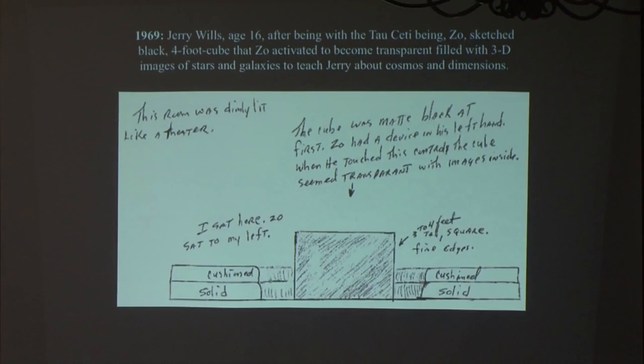The extraterrestrial from Tau Ceti also showed Jerry Wills a four-foot black cube that holographically projected the Milky Way galaxy and other parts of the universe that showed different stars in different colors. As Zoe pointed out star systems, he telepathically told Jerry that people, homo sapien, or at least humanoid types on Earth did not originate on this planet. This is a laboratory planet. Life has been mixed, matched, manipulated, and seeded on this planet for literally maybe a couple of billion years, but certainly the last half billion.